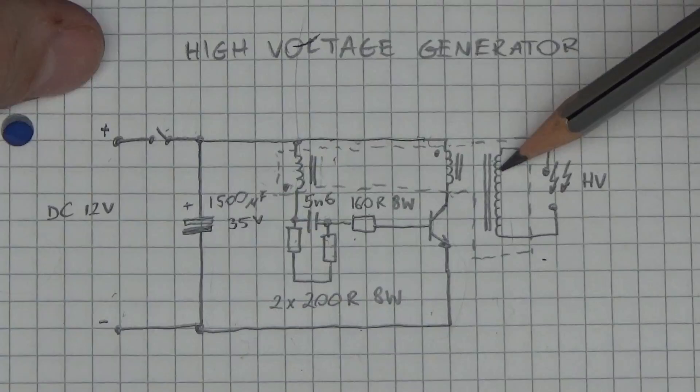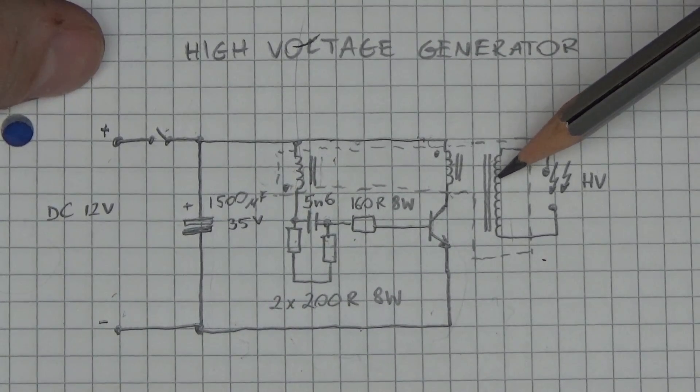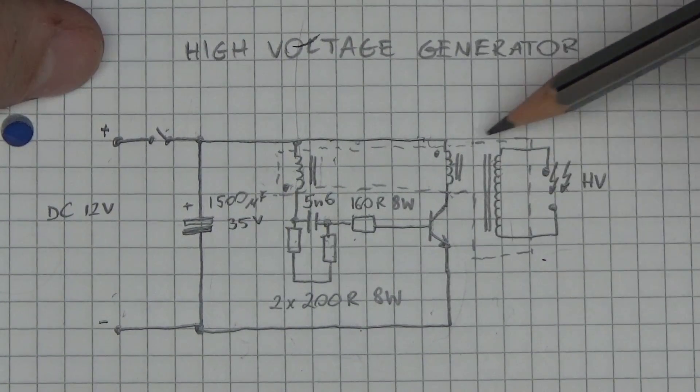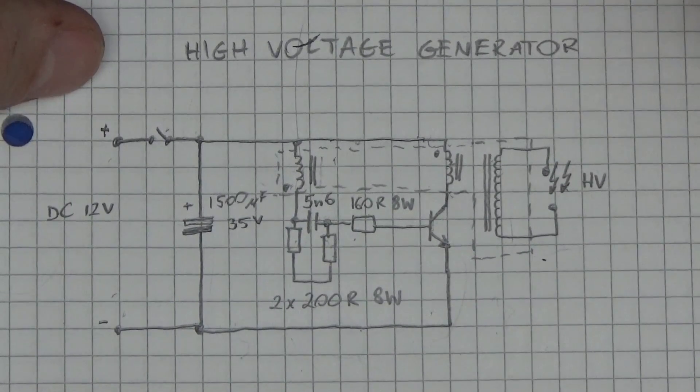Then we've got three windings on a ferrite core. We've got the feedback, the primary and the secondary high voltage winding. It's worth noting the high voltage winding is not connected to anything on the primary side. It's entirely separate to everything.